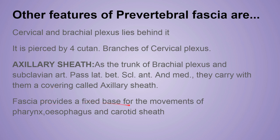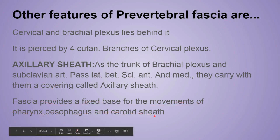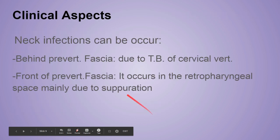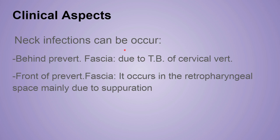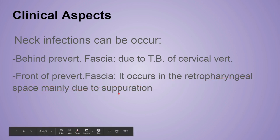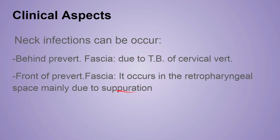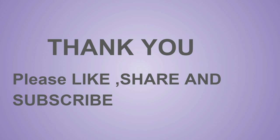The pre-vertebral fascia also provides a fixed base for the movement of the pharynx, esophagus, and carotid sheath. Regarding the clinical aspect: neck infection can occur behind or in front of the pre-vertebral fascia. Infection behind the pre-vertebral fascia occurs due to tuberculosis of the cervical vertebra. Infection in front of the pre-vertebral fascia occurs in the retropharyngeal space, mainly due to suppuration — the formation and discharge of pus. This concludes the discussion on the pre-tracheal and pre-vertebral fascia. Thank you.